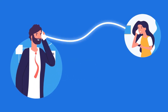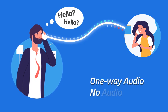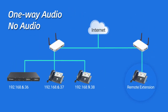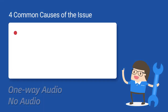When a remote extension is in a call, there is only one-way audio or even no audio. The same problem will also happen with an extension in a different network segment from the PBX. Generally, there are four common causes of this issue.